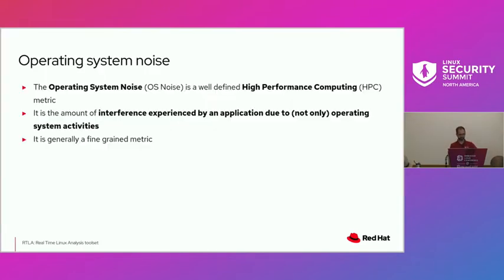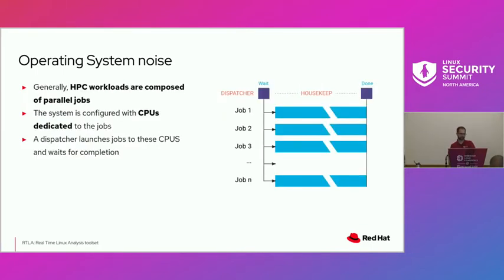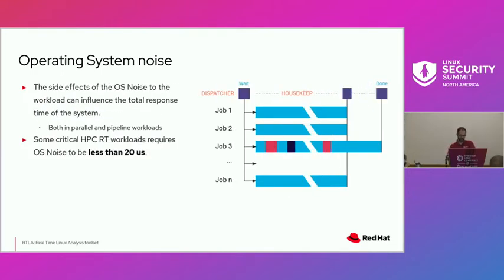Starting with the OS noise tracer: operating system noise is a well-defined metric in HPC. It is basically the amount of interference experienced by an application from operating system activities — and not only OS activities, but any kind of activities. It's generally a very fine-grained metric. HPC workloads are generally composed of parallel jobs: one dispatcher sends jobs to all CPUs, they run in parallel, and then the results are collected.